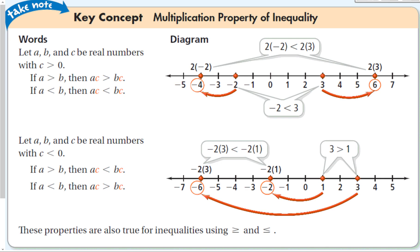There is one very important difference about the multiplication property of inequality versus what we did with addition and subtraction with inequalities and with multiplication with regular equations. Let A, B, and C be real numbers. Basically, if we multiply both sides by a number that is bigger than 0, we keep our inequality the same. For instance, if I multiply both sides of this inequality by 2, we get negative 4 and positive 6, and negative 4 is still less than positive 6.